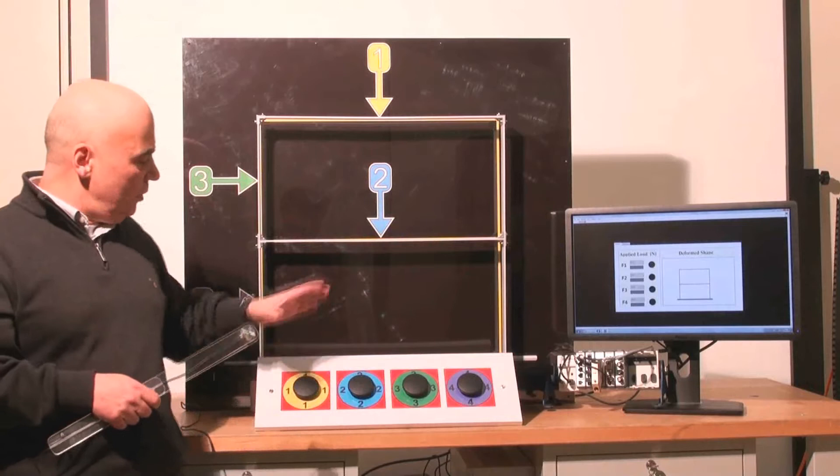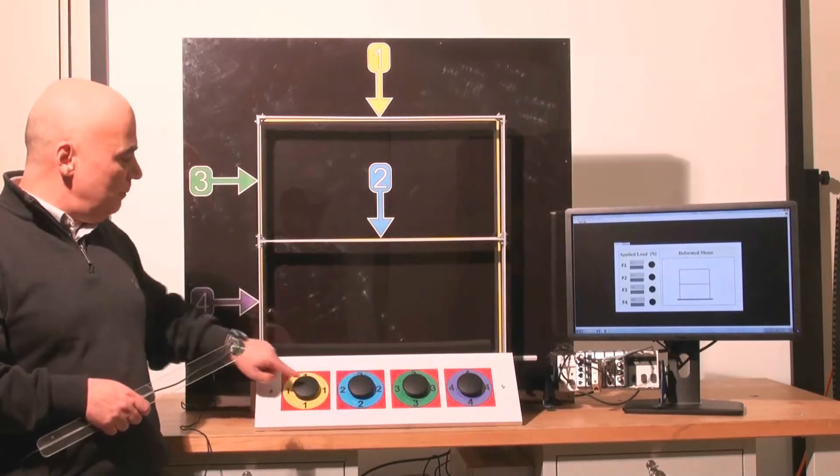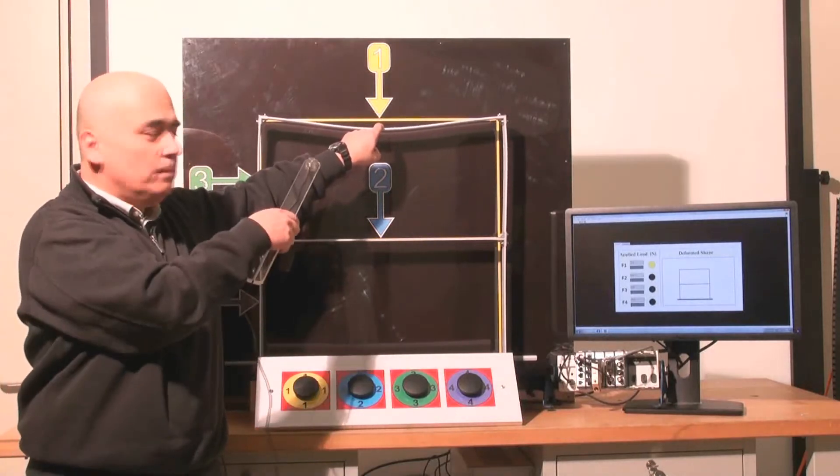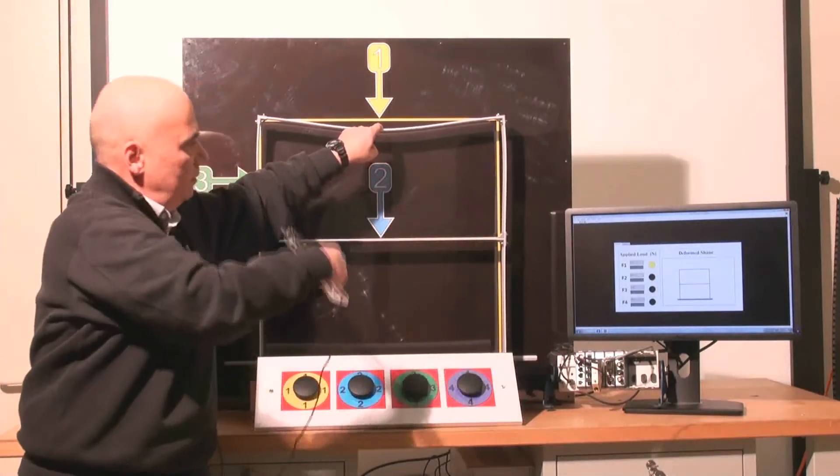So the idea is the following: to select a loading scheme, for instance number one, which is this scheme, and to load this frame. If I load it by hand, we can watch the deformation.